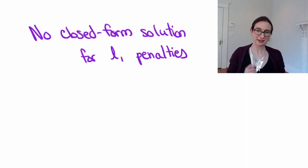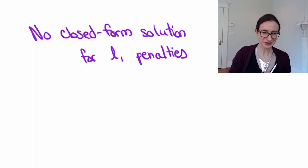So we just showed that least squares and ridge regression have closed form solutions. However, all of that breaks as soon as you want to use an L1 penalty.